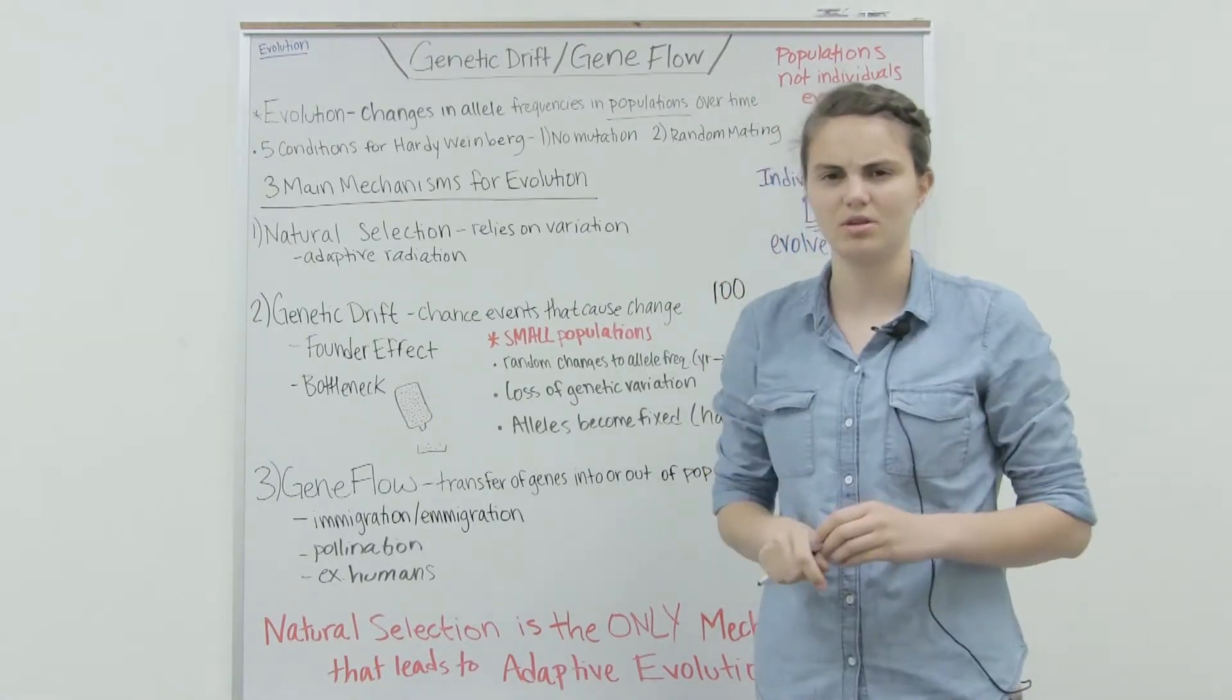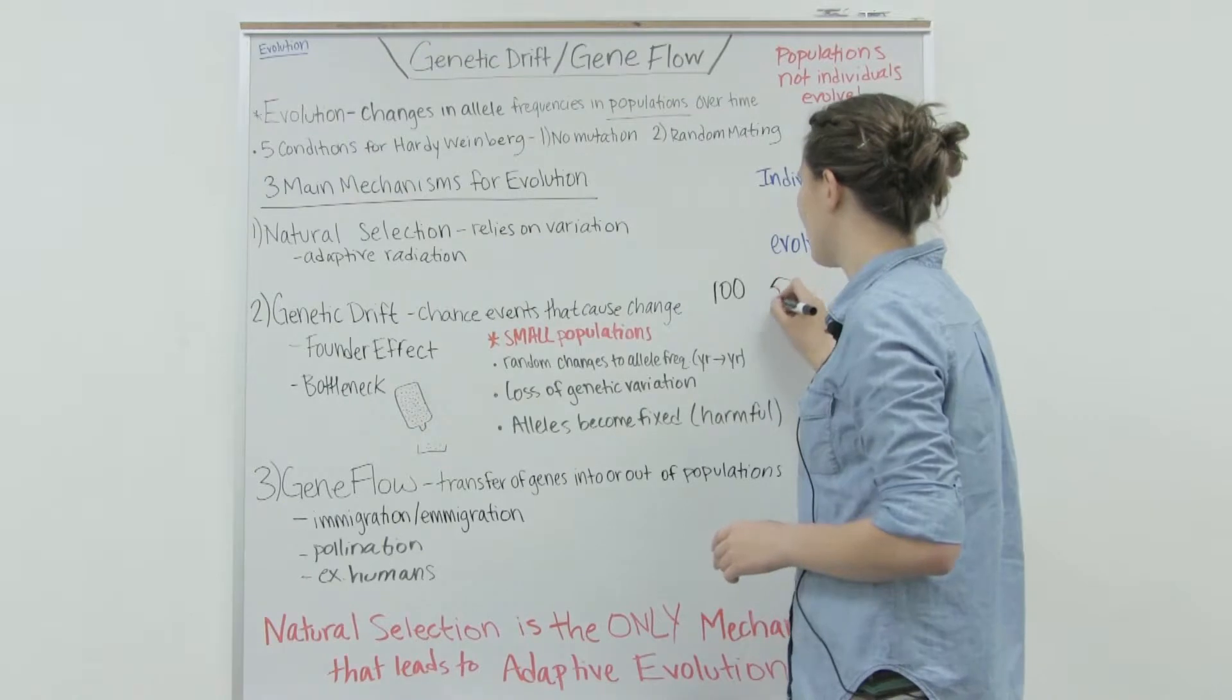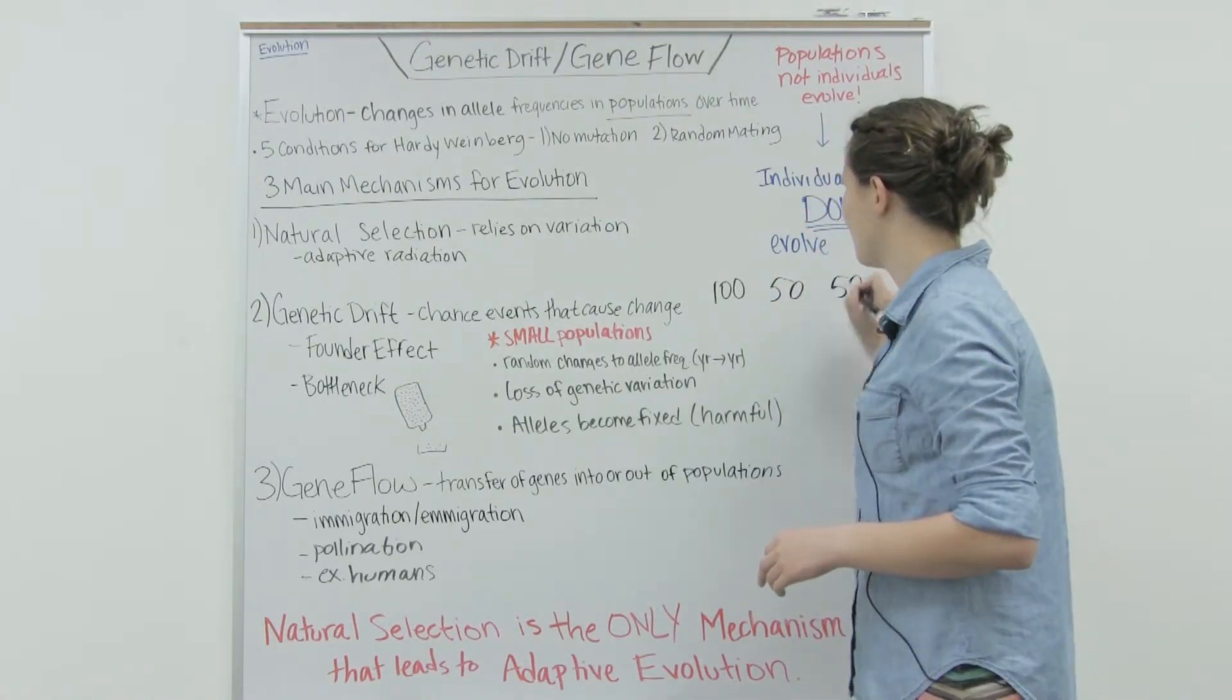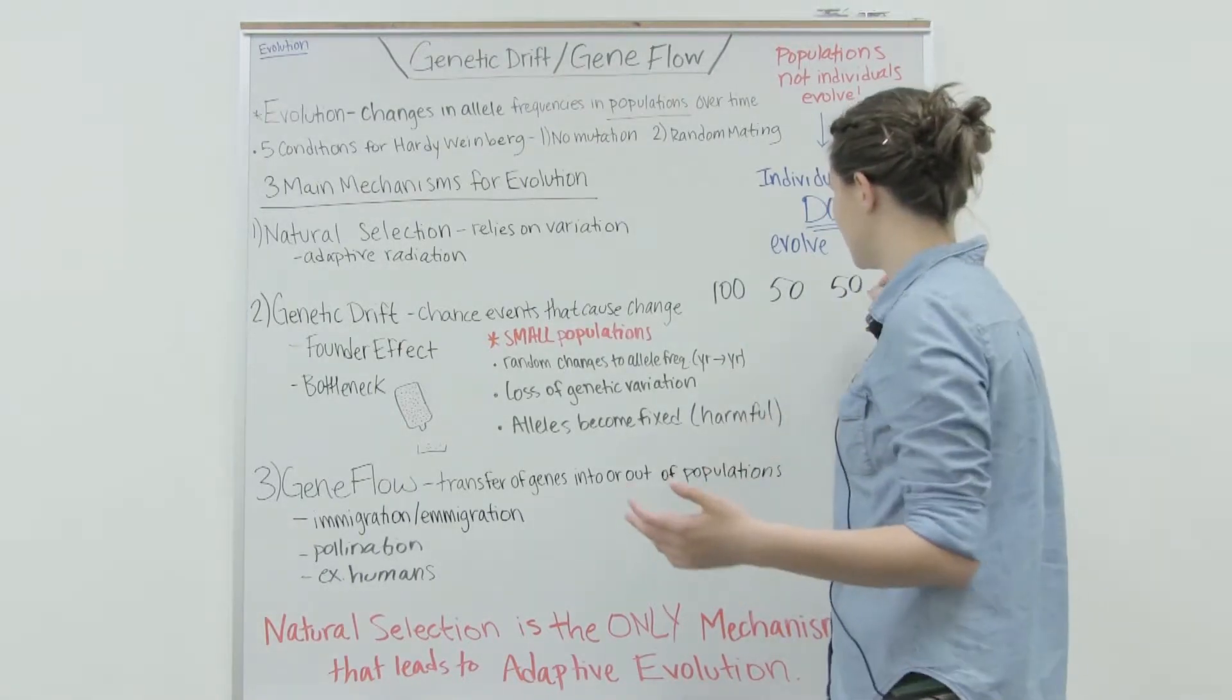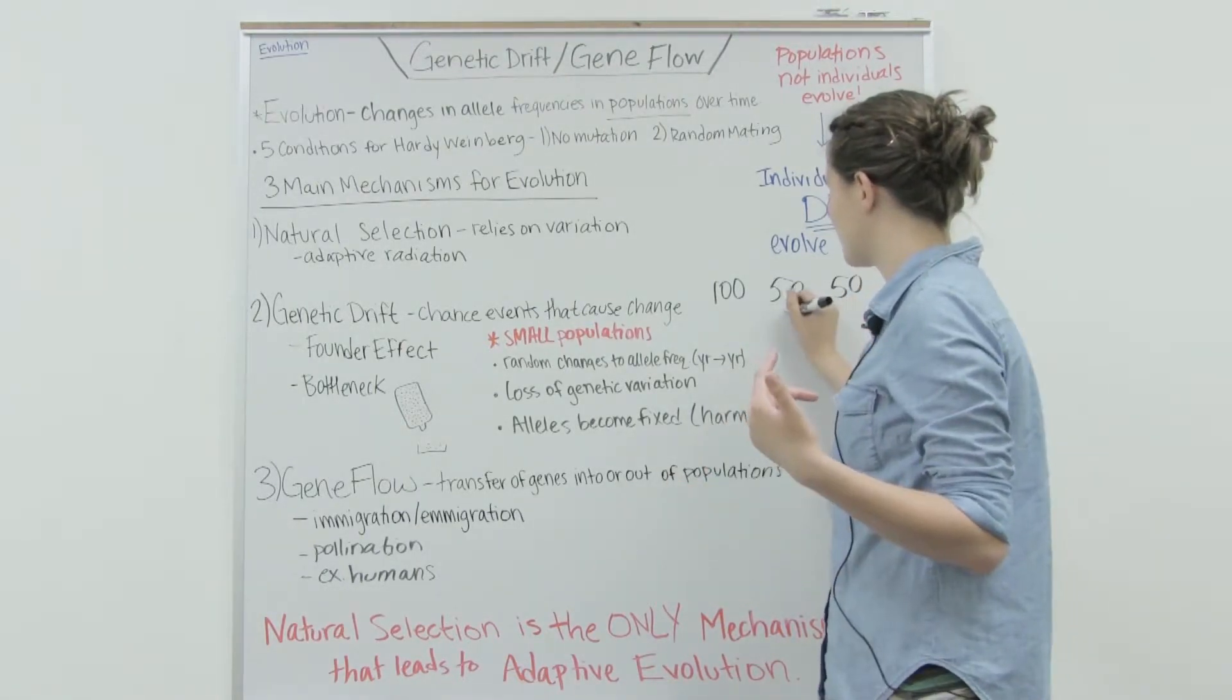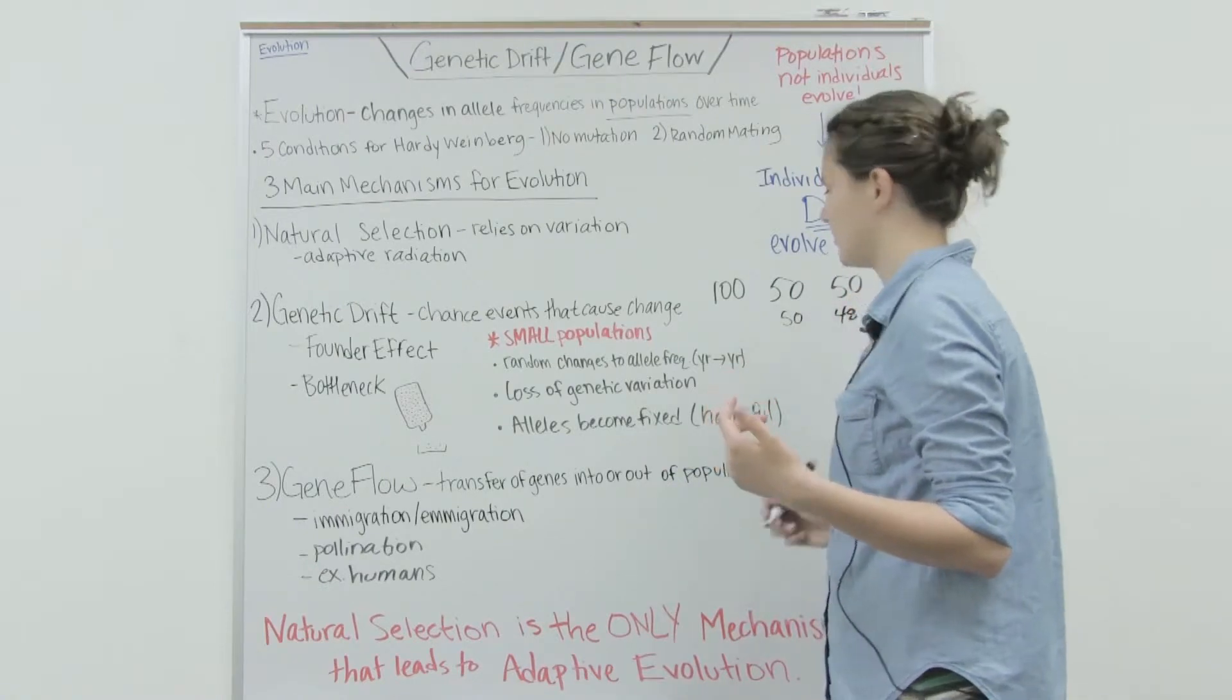If we have a population of 100 individuals, and 50 have one allele and 50 have the other, if there's some chance event that knocks out two of them, it's not going to be that drastic of a change in the allele frequency.